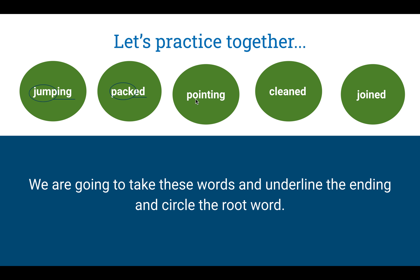Our next word is pointing. My root word is point, and the ending is I-N-G. This means that I am pointing with my cursor right now. The next word is cleaned. Our root word is clean and our ending is E-D — it already happened. Our last one to practice is joined. Our root word is join and our ending is E-D. That means you've already joined — it's already happened.